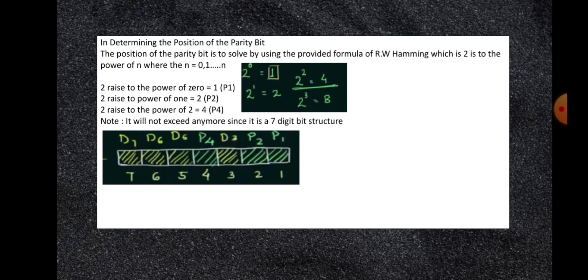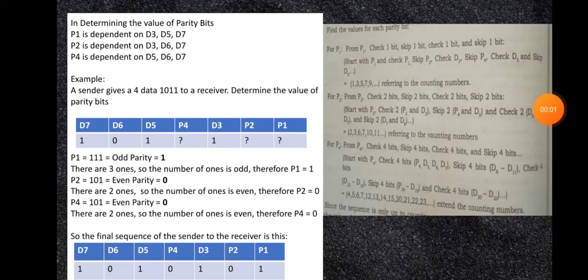We have P1, P2, D3, P4, D5, D6, D7 — the parity bits and the data bits. On the right side, there is a pattern to determine the value of the parity bits for P1, P2, and P4.